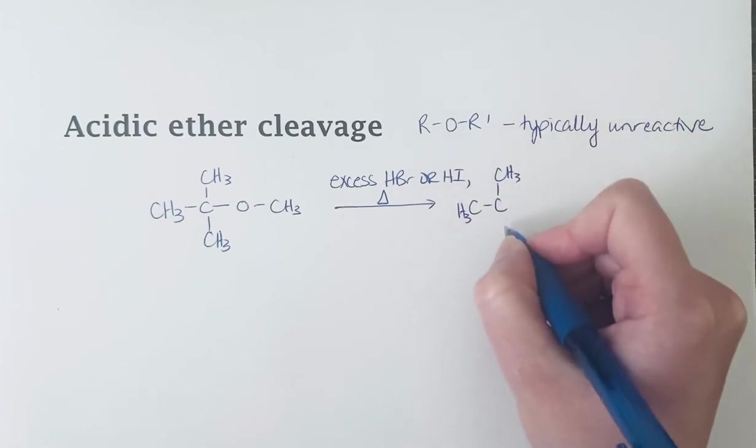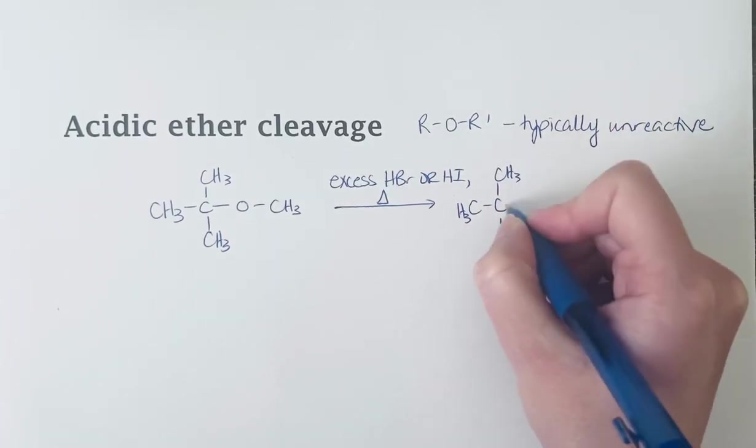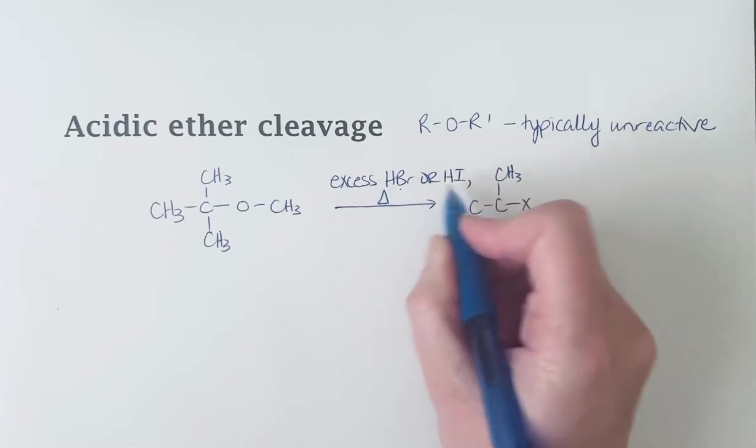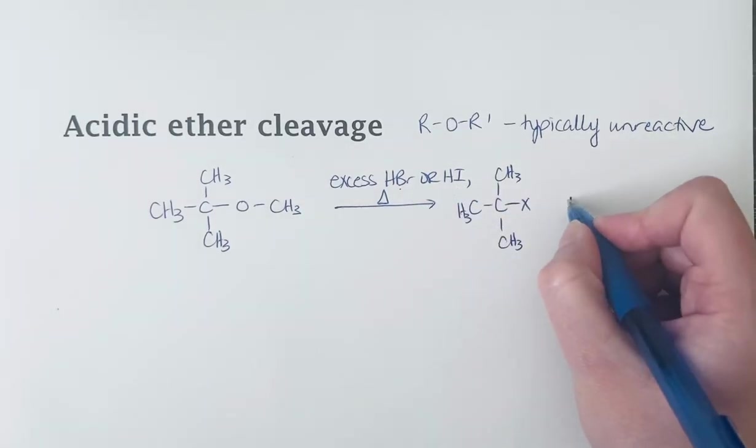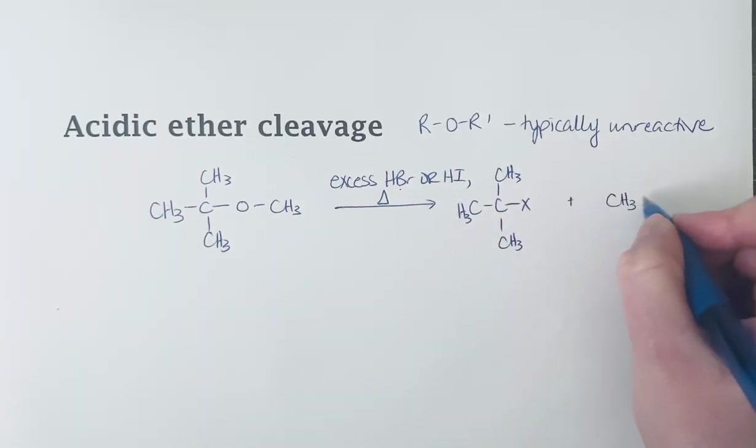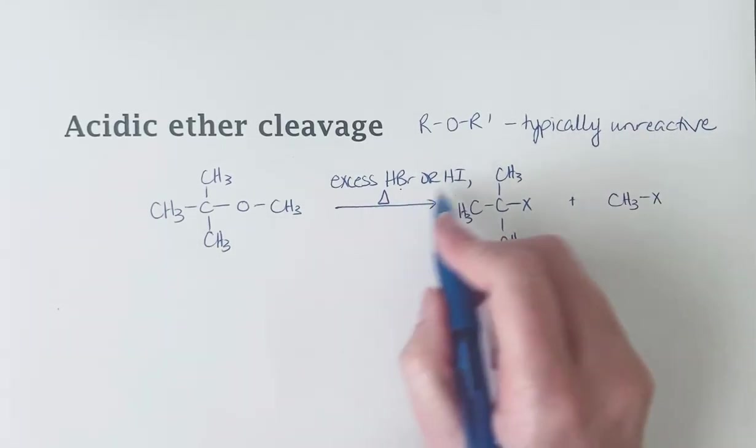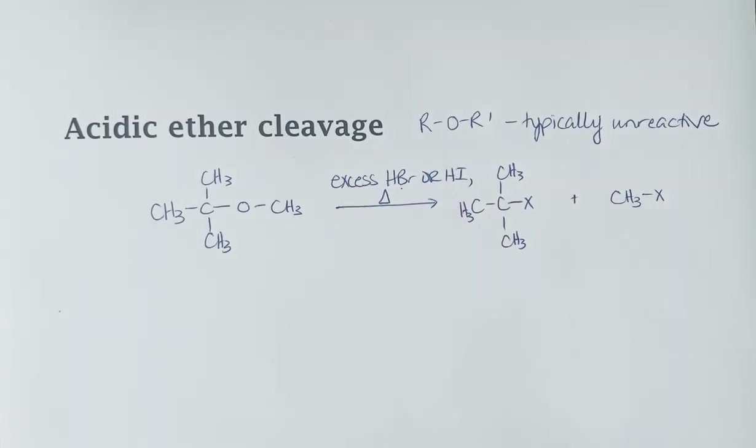I'm going to go ahead and draw these, and then we'll take a look at the mechanism. X in this case would be either bromine or iodine. So if we had an excess of these acids, we would get both of those alkyl halides.